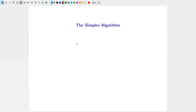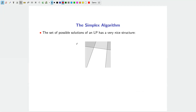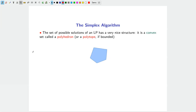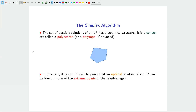The simplex algorithm is extremely popular and widely used in practice, named one of the top 10 algorithms of the 20th century by Science News. The simplex algorithm is very combinatorial in nature — it exploits the fact that the feasible set of an LP has a nice structure. It is given by the intersection of finitely many inequalities, forming a convex set called a polyhedron or polytope.